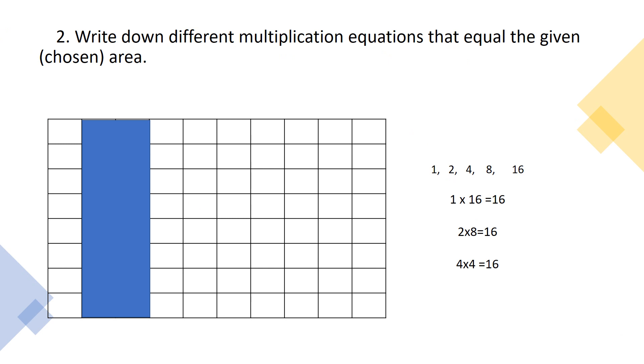So then we're going to write down other different multiplication equations that equal 16. So we can start with our one, which is one times 16 is going to be 16. Two times eight is also going to be 16. And then we have the double, four times four, which also equals 16. So we just made three equations that all equal 16 and a little rainbow there.